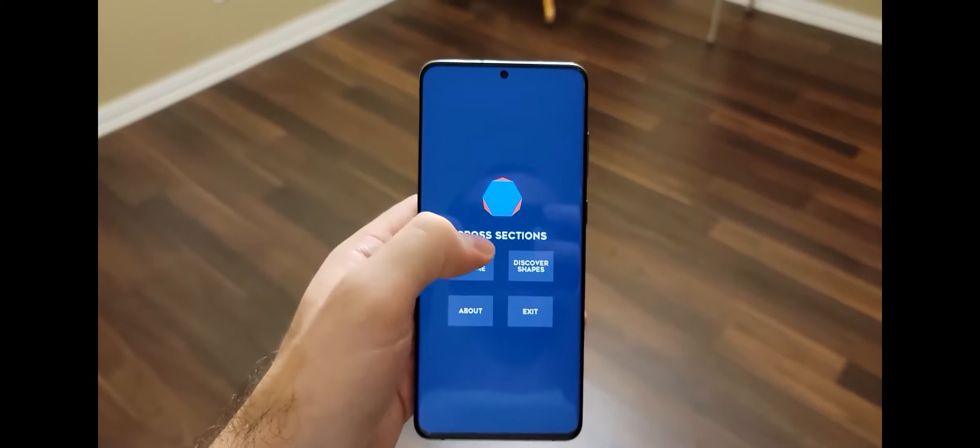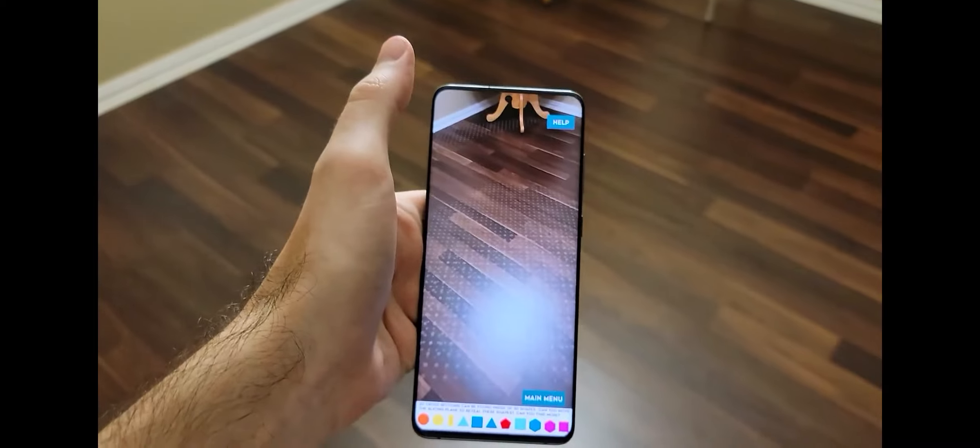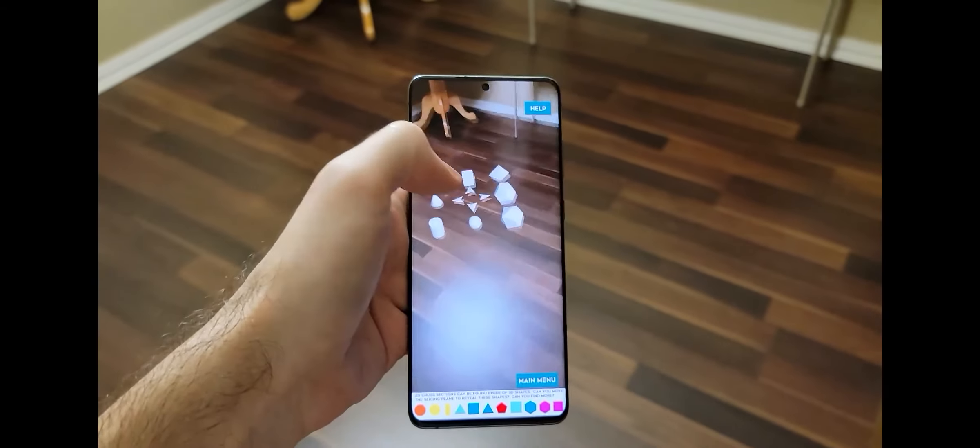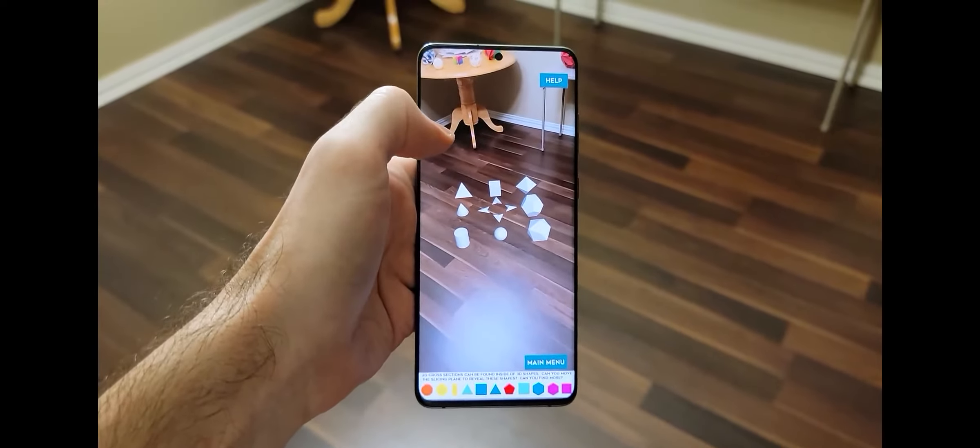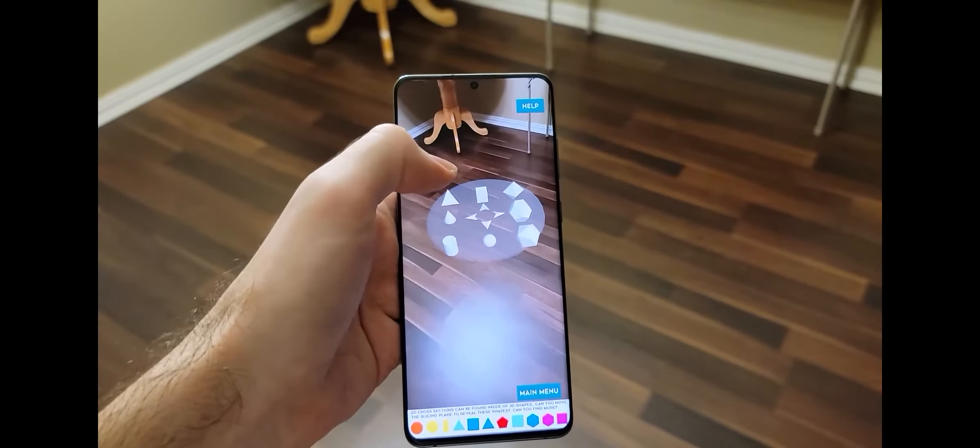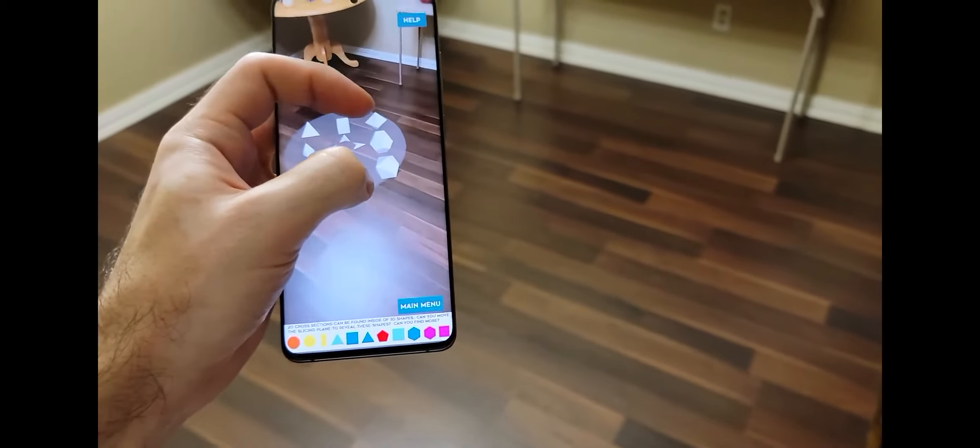Let's take a look at the Discover Shapes scene now. Setting up the augmented reality environment is very similar. You scan to find a plane. Tap to place an object. Now this first object that you see is just a handle like a tool. You can tap to select it. Notice that circle, the sphere around it for visualization that it's selected.